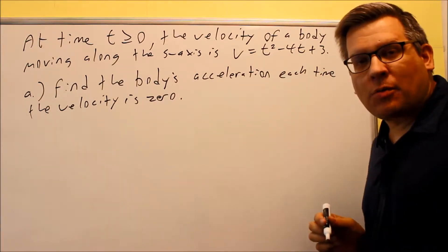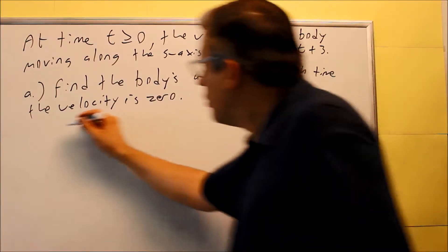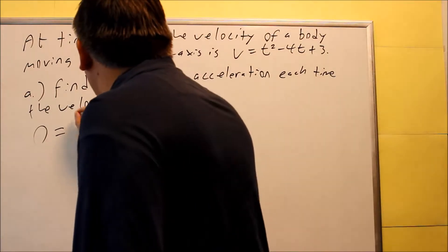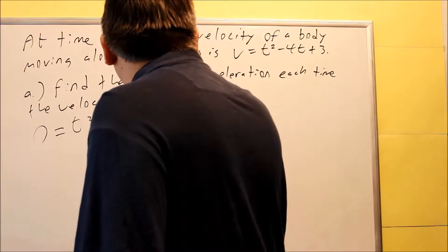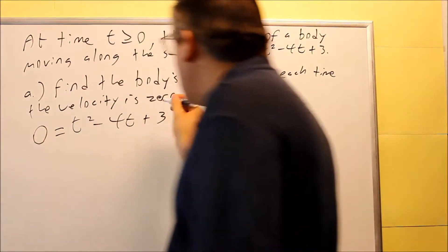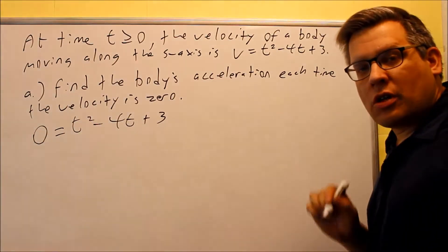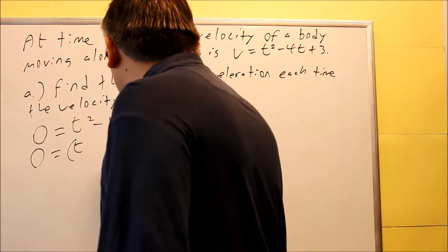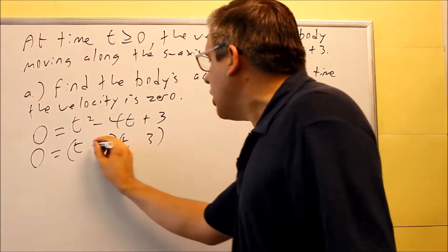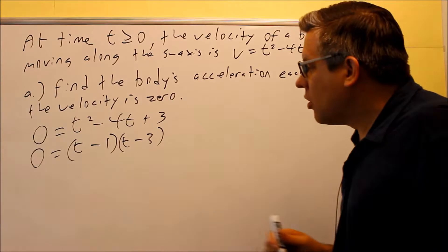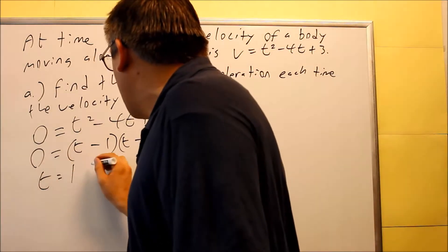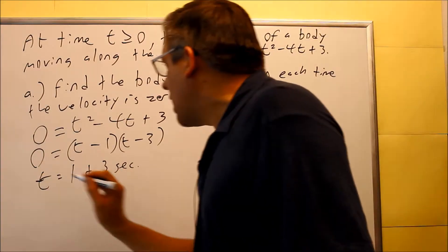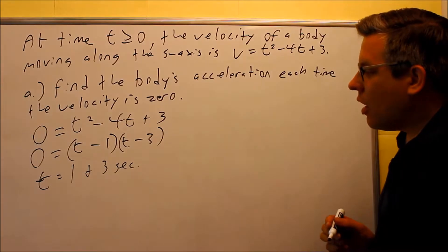First, let's find the places where the velocity is equal to zero. We're going to set this original function equal to zero: zero equals t squared minus 4t plus 3. To set that equal to zero, we're just going to do some factoring to find the times. We can use 1 and 3 — both of them are going to be negative to get the negative term in the middle. So we get t equals 1 and 3 seconds.